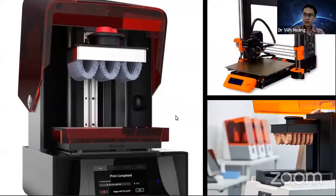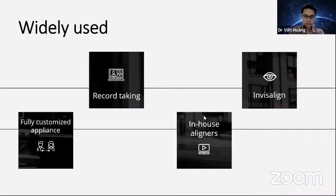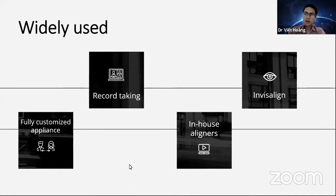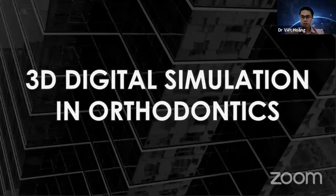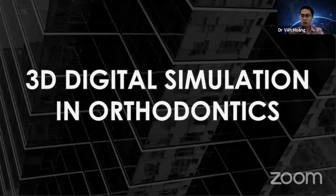Today we have 3D technology — extraoral scanners like 3Shape and others, plus many 3D software options including Invisalign, ClinCheck, and 3Shape itself, as well as 3D resin and FDM printers. We use 3D in orthodontics for record taking, Invisalign, fully customized appliances, or in-house aligners. In Vietnam, about 90% are using 3D only for record taking or Invisalign, not much for in-house aligners.